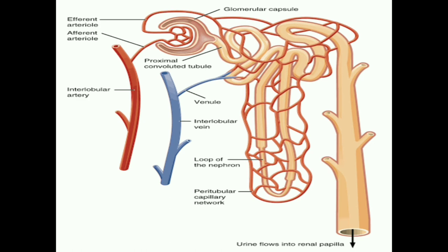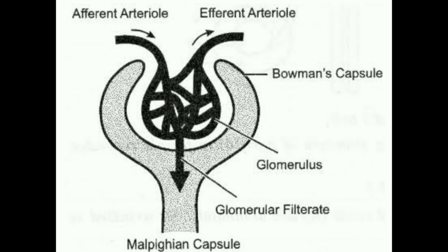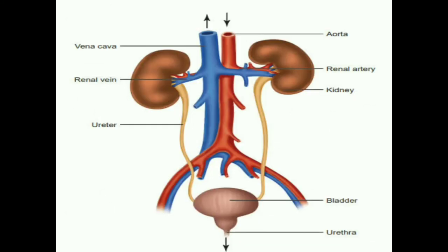One end of the glomerulus is attached to the renal artery, which brings dirty blood containing urea into it. The blood is filtered in the glomerular capillaries, and the water and waste enter into Bowman's capsule. Some substances in the initial filtrate — such as glucose, amino acids, salt, and a major amount of water — are selectively reabsorbed as the urine flows along the tubule. The amount of water reabsorbed depends on how much excess water there is in the body. The urine forming in each kidney eventually enters the ureter, which connects the kidney with the urinary bladder.